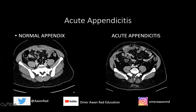This is acute appendicitis. On the left side we have a CT image through the abdomen pelvis showing a normal appendix. This structure here — remember that this is the right side of the body, this is the left side of the body, this is anterior, and this is posterior. This bright bone here is the sacrum. This is the right iliac bone. This is the left iliac bone. This of course is the psoas muscle. Coming off of the cecum is this blind-ending tubular structure with air, which is the normal appendix.